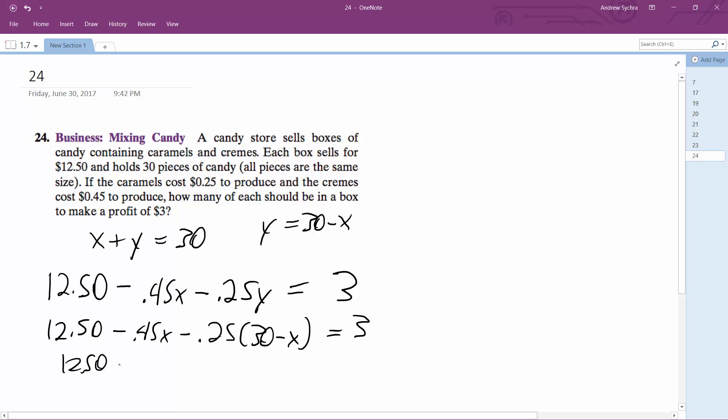Okay, 12.50, oh, 0.25, I think that's going to be 750 plus 0.25x. So 12.50 minus 7.50 equals 5, and then negative 0.45 plus 0.25.